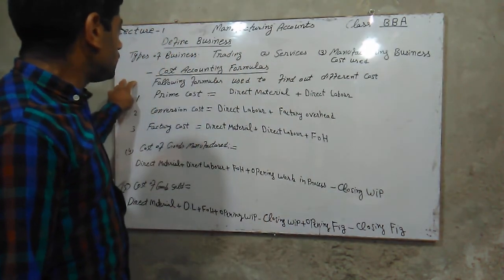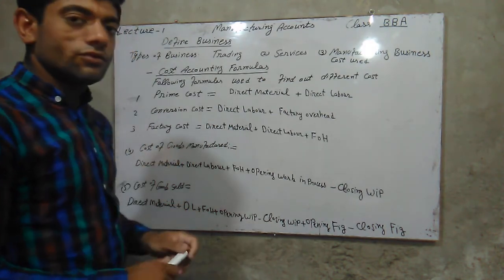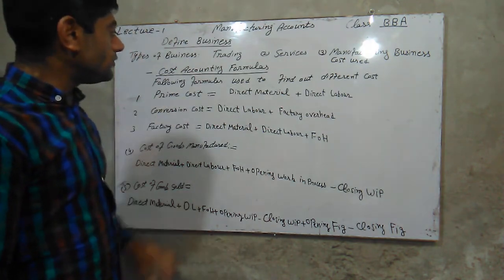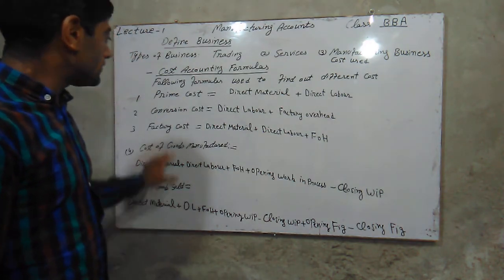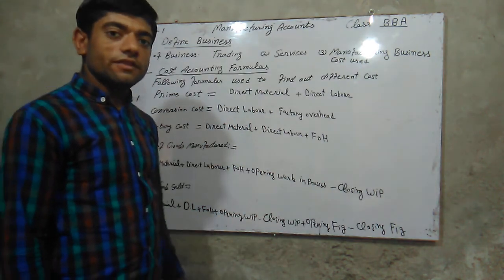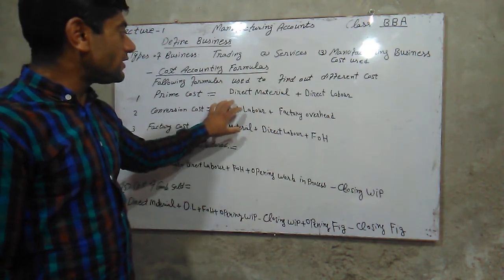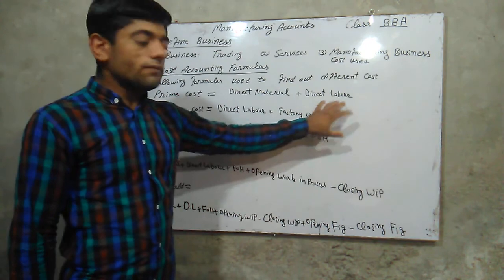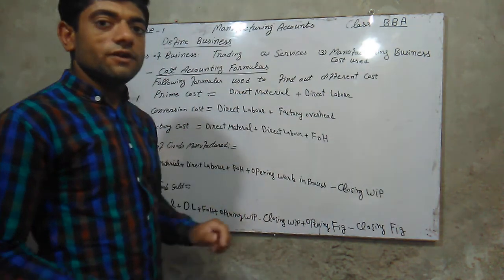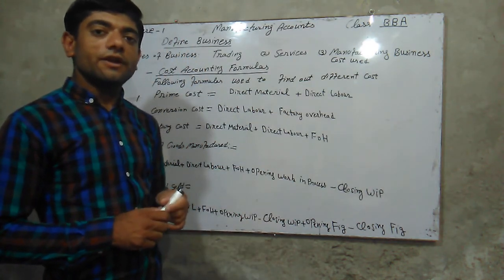These formulas are used to calculate the cost of goods manufactured and cost of goods sold statement. Remember these formulas. In the next lecture we will discuss these formulas with examples, so be prepared. We will solve an example using these formulas. See you in the next lecture — thank you and goodbye.